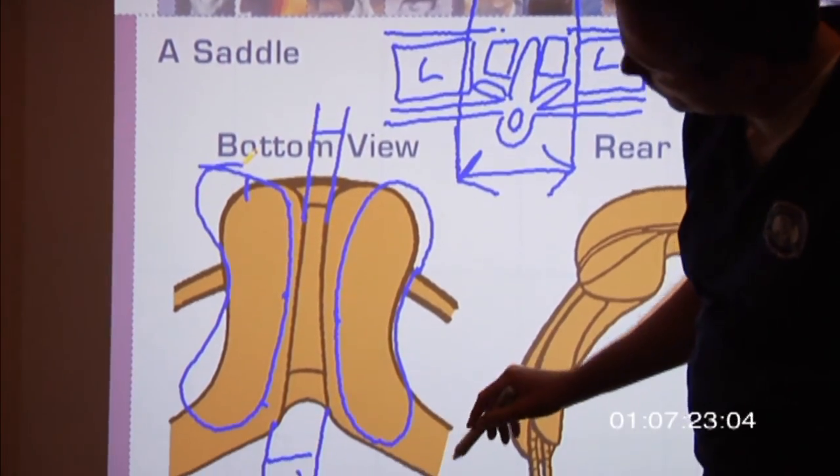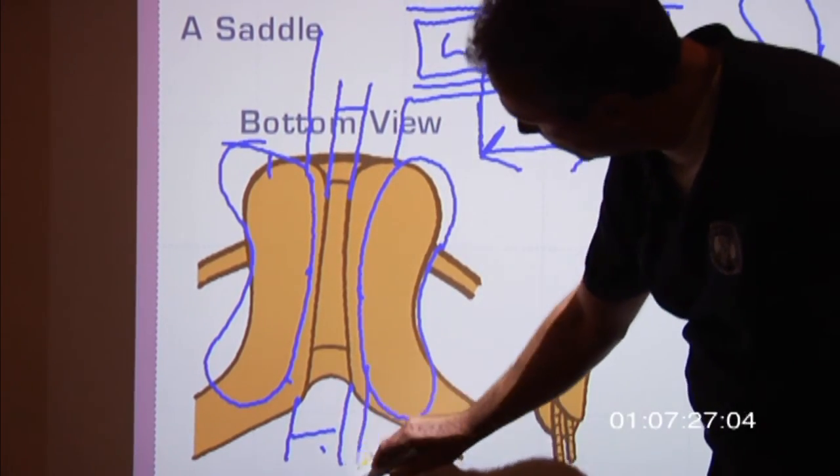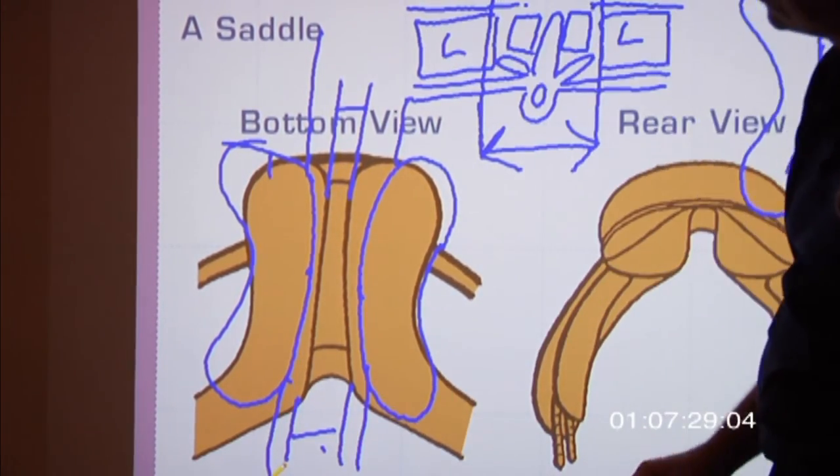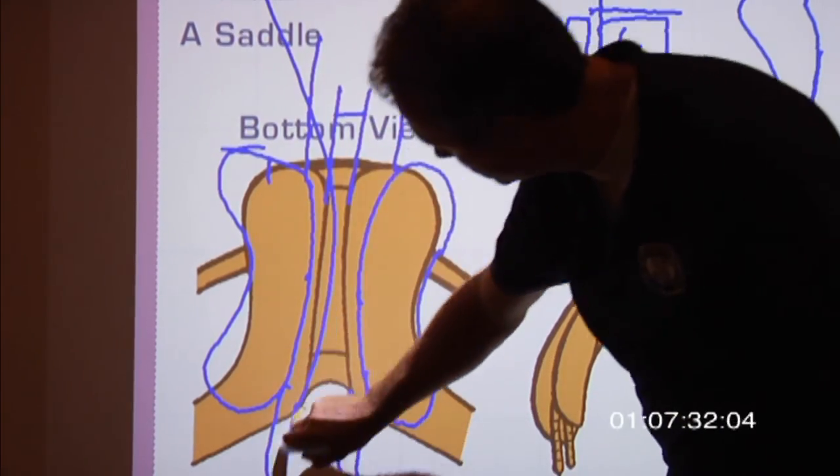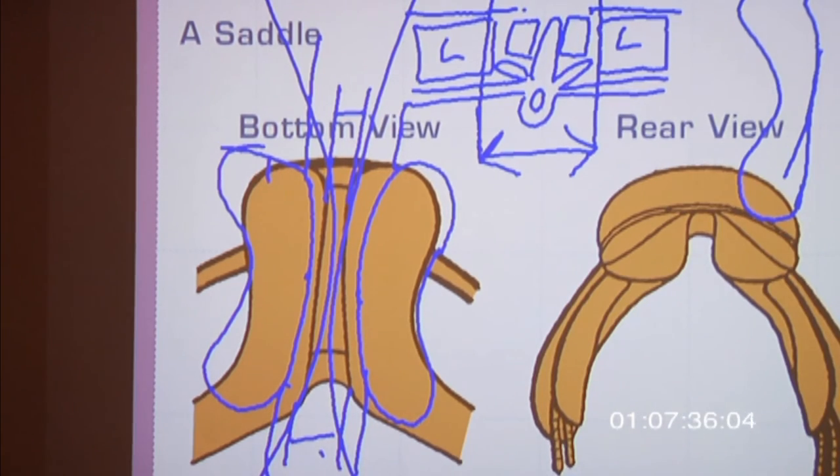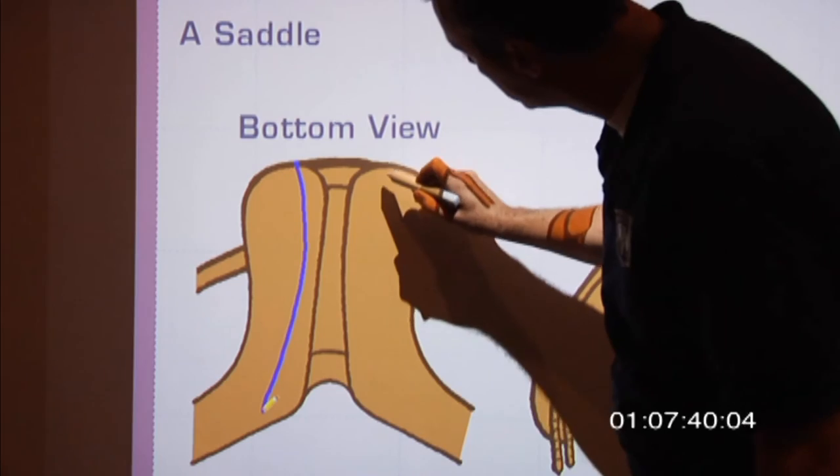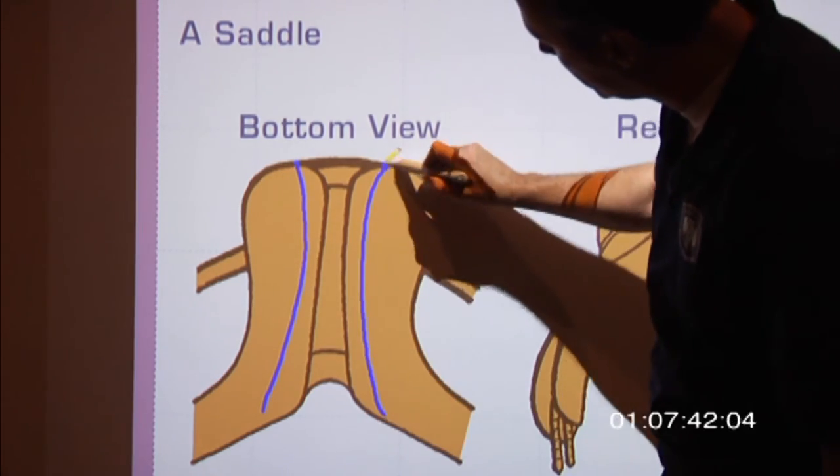So you notice we got the same space back then in the back as in the front. And then, because the horse's spine bends when you go around the corners to the left or to the right, we have a nice clearance in the front and in the back.